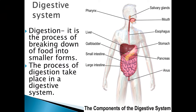Hello students, today we will read about the digestive system and the process of digestion. So what is digestion? It is a process of breaking down of food into smaller forms. The process of digestion takes place in a digestive system.